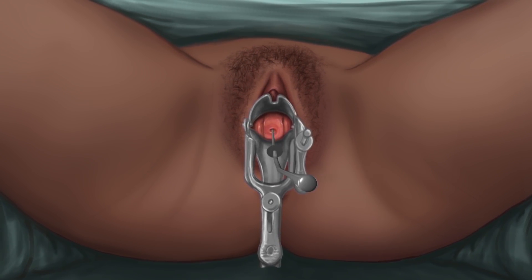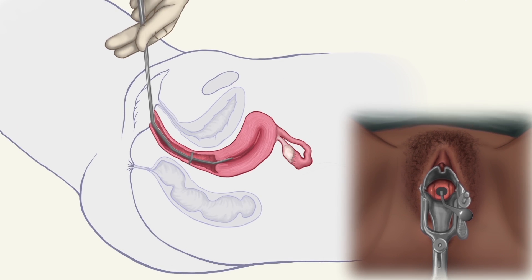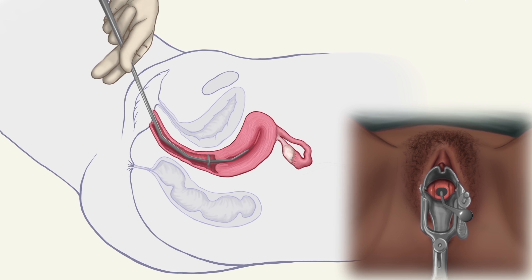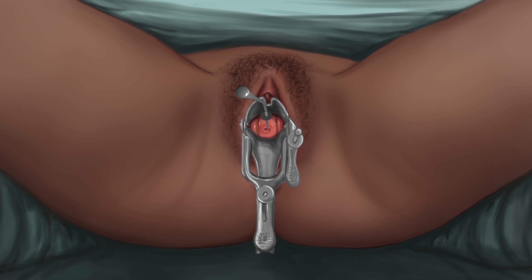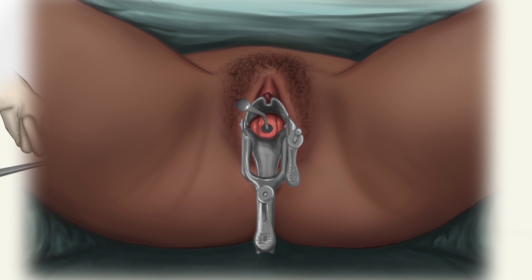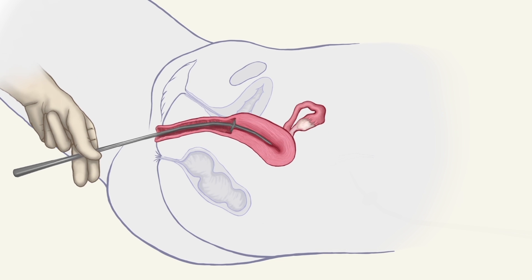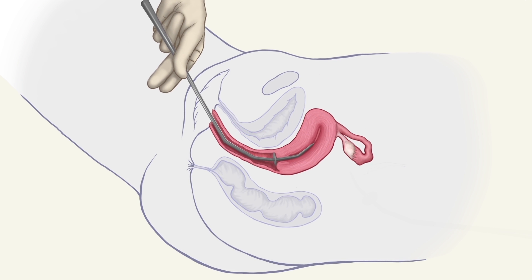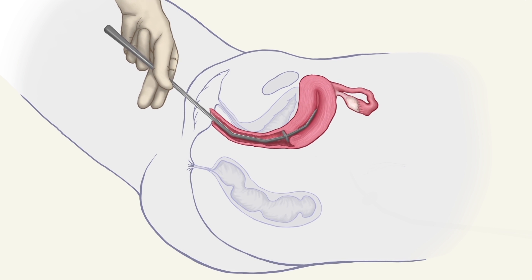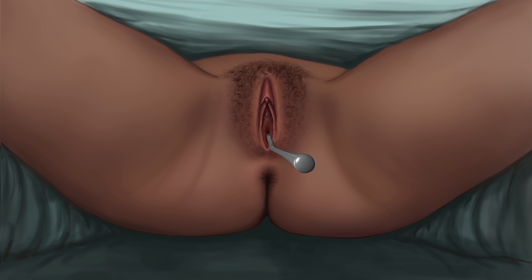Insert the uterine elevator in a normal position if the uterus is anteverted. If the uterus is retroverted, which is less common, insert the elevator facing downwards. Gently push down on the uterine elevator to determine the fundal height. Remove the speculum, leaving the uterine elevator in place.